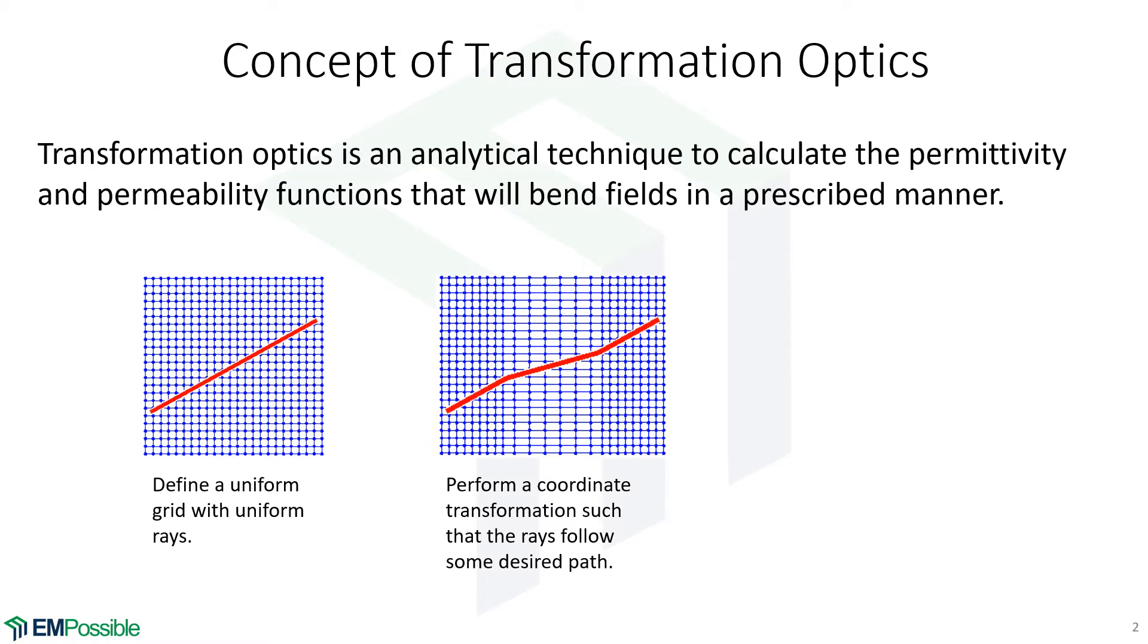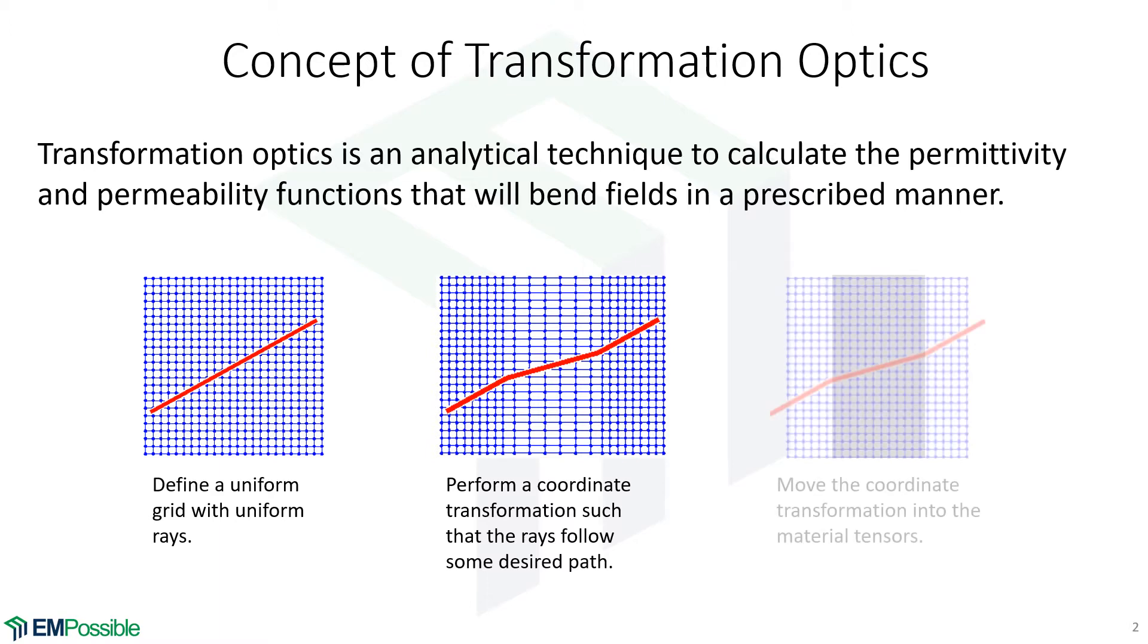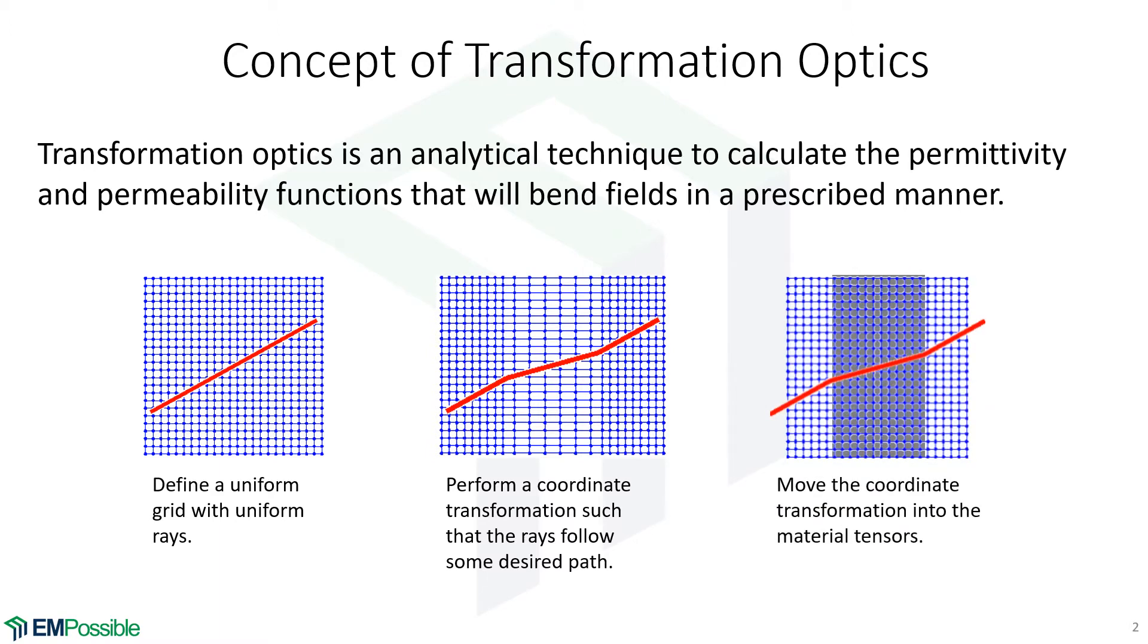When we apply transformation optics, we end up back in the original coordinate system but our material properties changed. And our material properties changed in a way that the wave would bend in the way that we prescribe by our coordinate transform. But we do not have a coordinate transform, we have modified materials. And as we know what transformation optics does is move the math from the coordinate transform into the materials.